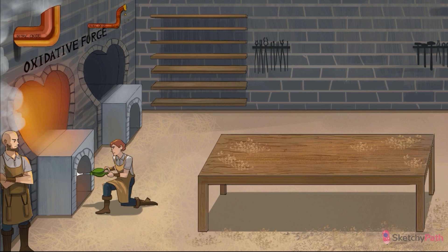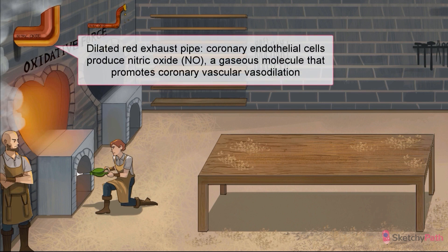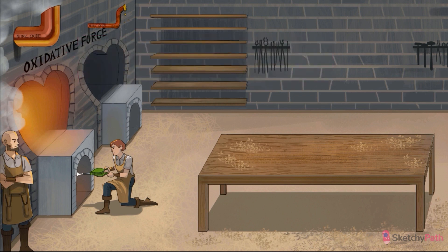The only way to meet that demand is to increase blood flow. Think of it as a coronary artery — like a big dilated exhaust pipe — maintaining the proper flow of oxygen to the forge that is your cold stony medieval heart. To increase oxygen delivery, it needs to dilate. Coronary endothelial cells are responsible for the production of nitric oxide,